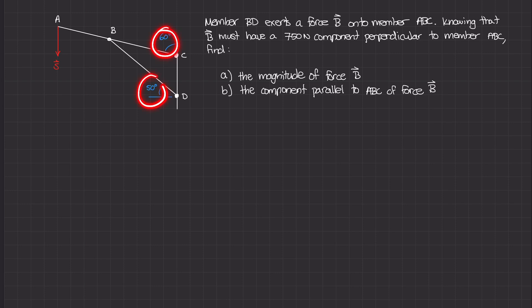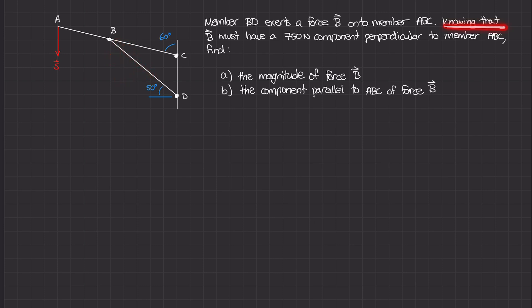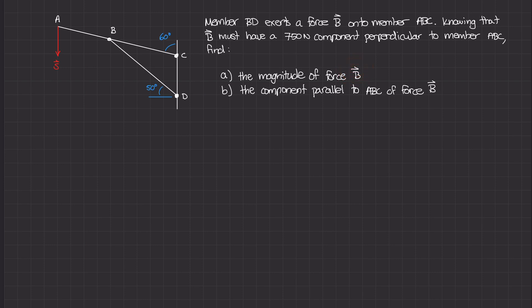The diagram shows angles of 50 and 60 degrees. The problem states that member BD exerts a force B onto member ABC. Knowing that B must have a 750 Newton component perpendicular to member ABC, we need to find two things: the magnitude of force B, and the component of force B that is parallel to ABC.